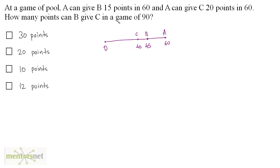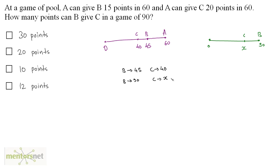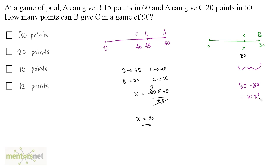We've been asked how many points B can give C in a game of 90. So the game is now 0 to 90. If B reaches 90, how many points does C have? When B has 45 points, C has 40 points. So when B has 90 points, C has x = 90 times 40 divided by 45, which equals 80 points. The difference is 90 minus 80, which is 10 points. B can give C 10 points in a game of 90. Option C is the correct answer.